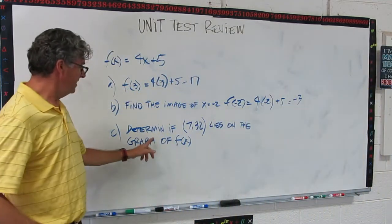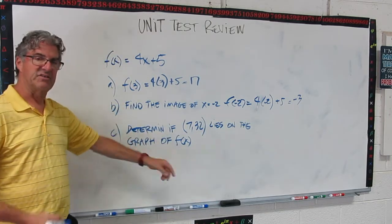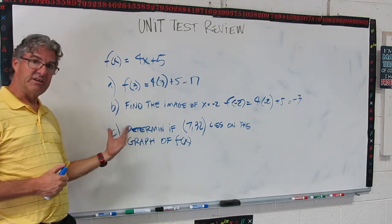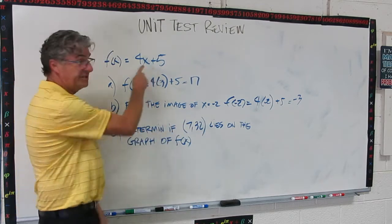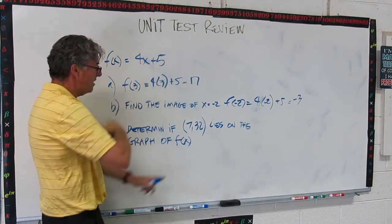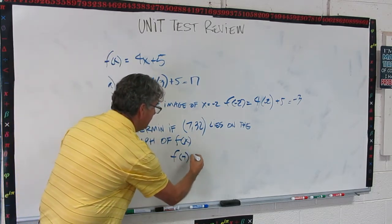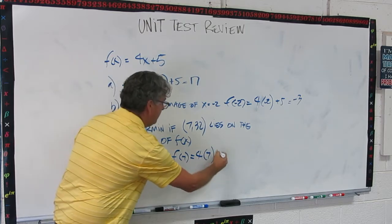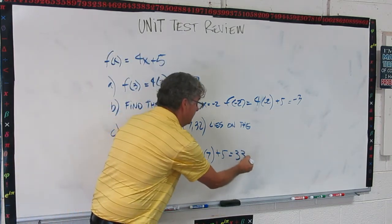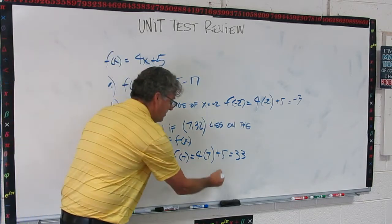So there's that one. Last one. Determine if the point 7,32 lies on the graph of f of x. Pause the video and do that. Okay, let's see how you did. If you understand this question correctly, what they're saying is, is this a point on this function? The way you test that is you put the x value in for x, and if this whole thing spits out the y value, the answer is yes. So what I'm going to write is f of 7 equals 4 times 7 plus 5. 4 times 7 is 28 plus 5 is 33. So does this point lie on the function? No. So you want to answer that question? No.